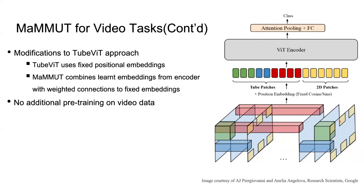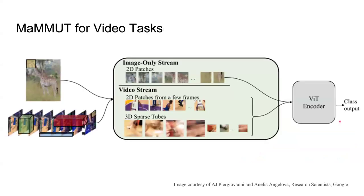Importantly, MaMMUT was never pre-trained on any video data. It was only fine-tuned on a small video dataset after pre-training was complete. To summarize: for images they use 2D patches, and for videos they use sparse 2D patches from sampled frames along with sparse video tubes.